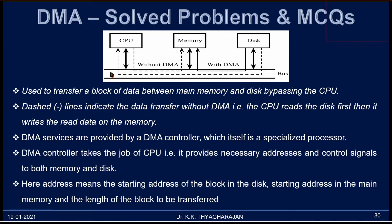The diagram lines show the data transfer without DMA — that is from disk to CPU, then from CPU to memory. But if DMA is provided, the data will be transferred from disk to memory directly. To perform DMA, you need a DMA controller. The DMA controller itself is a specialized processor.